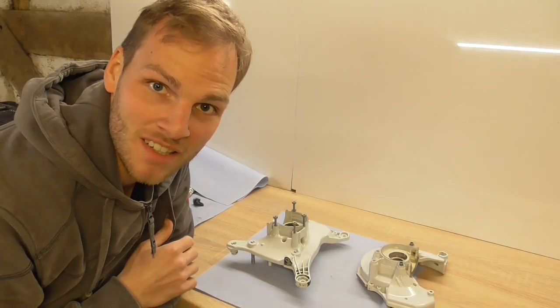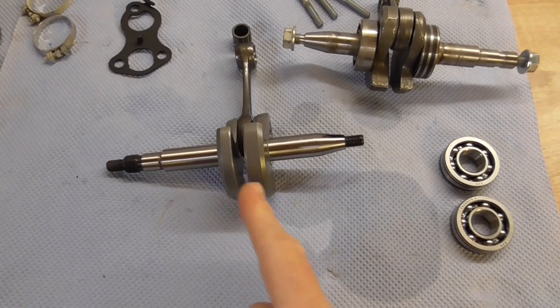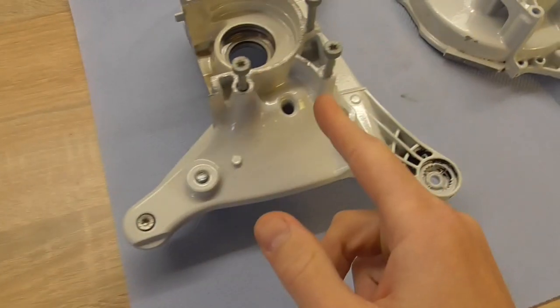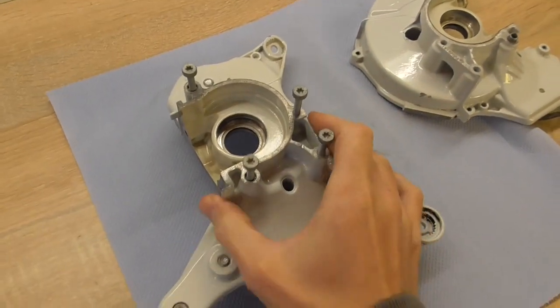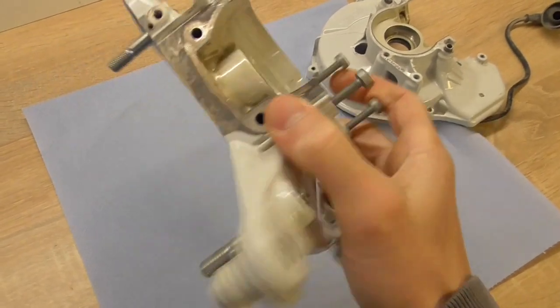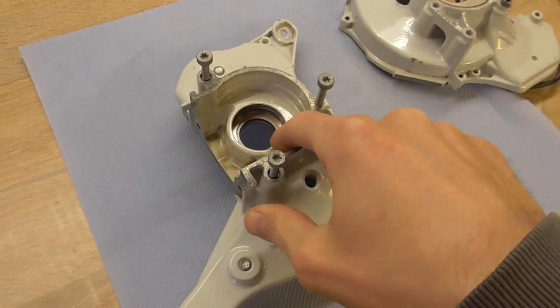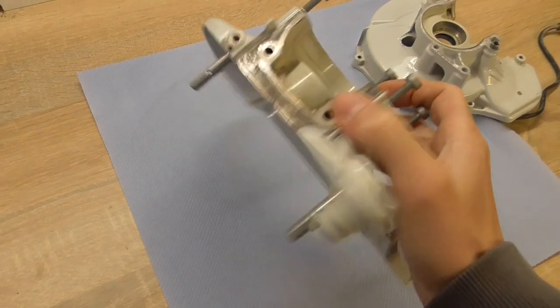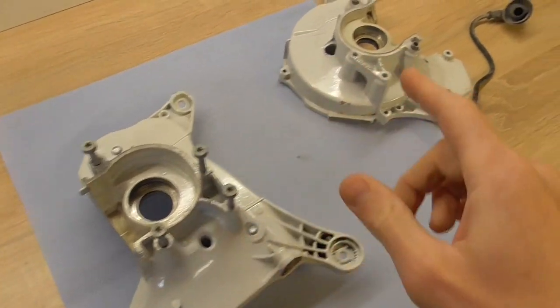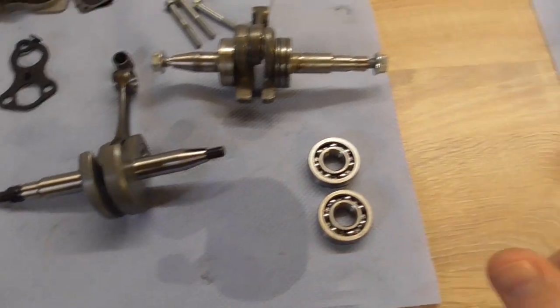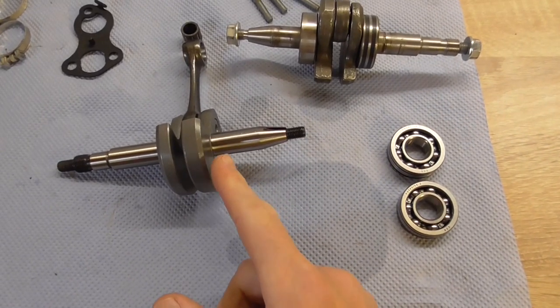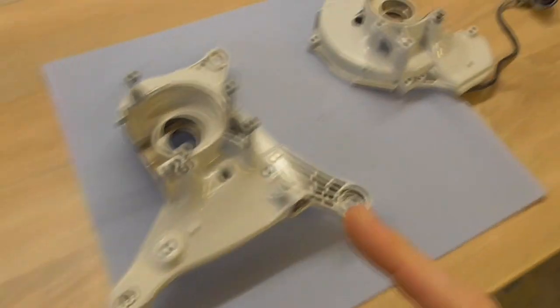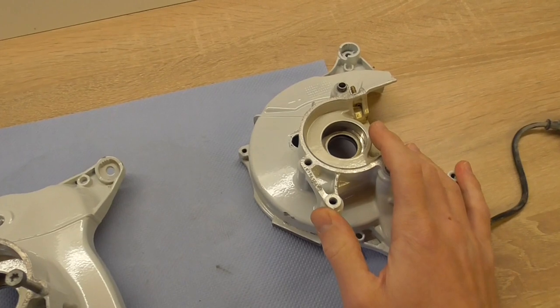Now all parts are nice and clean and we can start the assembly. The assembly of the crankshaft, the crankshaft bearings and the casings can be done in different ways. I want to go with putting one bearing in, then put the crankshaft in on one side and then go ahead with the other side. But on the second side we're gonna mount the bearing on the crankshaft and then the case on the crankshaft.